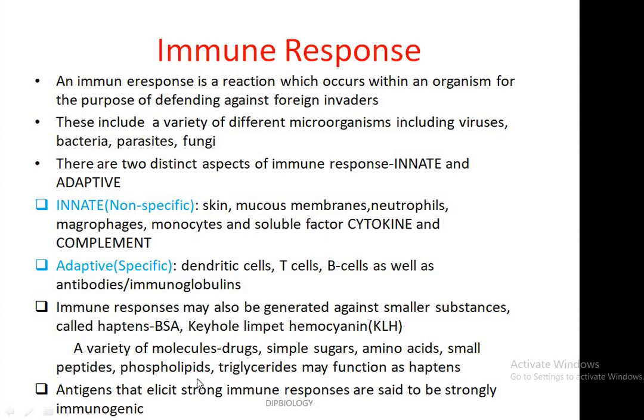A variety of molecules — drugs, simple sugars, amino acids, small peptides, phospholipids, and triglycerides — may function as haptens. Antigens that elicit strong immune responses are said to have strong immunogenicity.